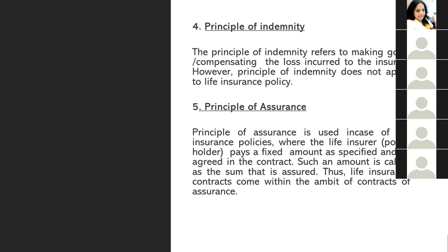The principle of assurance, as mentioned, applies to life insurance. Now, subrogation simply means the assignment or transfer of rights from the insured to the insurer. For example, take a particular car insured for 100,000 — the market price of the car at the time of the incident was 200,000. There is a loss of 100,000 due to being hit by a third party.